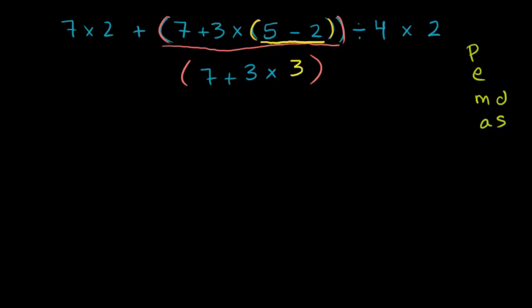Let me just rewrite it. That's the easiest thing. I'm having technical difficulties. So divided by 4 times 2. And on this side, you had that 7 times 2 plus this thing in orange parentheses there.